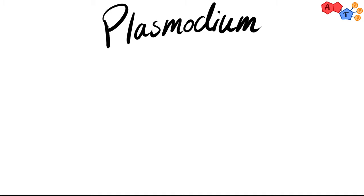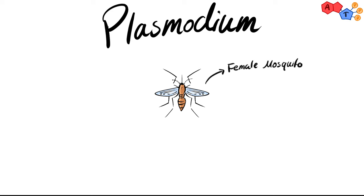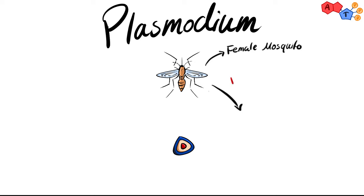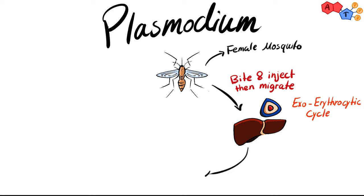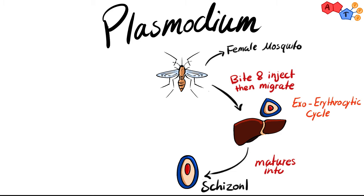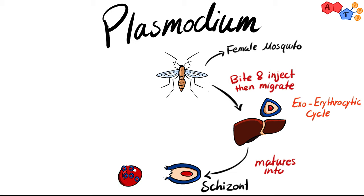Plasmodium is an important type of sporozoa and the main causative agent of malaria. The life cycle starts in the female mosquito, where sexual reproduction takes place between male and female gametocytes. The mosquito then bites and injects sporozoites into the host. These sporozoites migrate to the liver — referred to as the exoerythrocytic cycle — where they mature into schizonts, which then rupture and release merozoites into the blood.